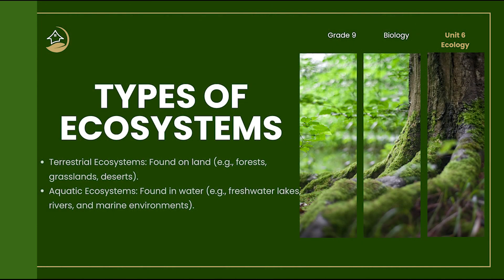Ecosystems can be divided into major types: terrestrial ecosystems and aquatic ecosystems. Terrestrial ecosystems are found on land — for example, forests, grasslands, deserts, and tundra. Aquatic ecosystems are found in water, and include freshwater ecosystems like lakes and rivers, and marine ecosystems like oceans and coral reefs. Each of these ecosystems supports unique species adapted to the environment — a cactus thrives in the desert while a clownfish thrives in coral reefs.